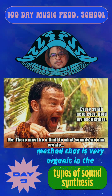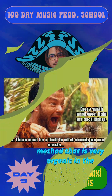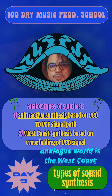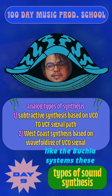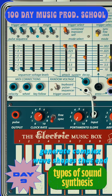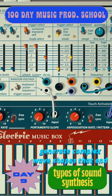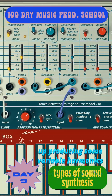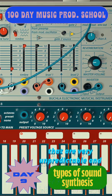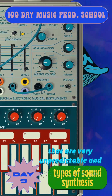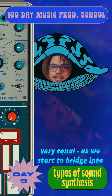Another method that is very organic in the analog world is west coast synthesis, also known as the wave folding method, like the Buchla systems. These generate complex wave shapes that end up producing some variable harmonics that is very unpredictable and very tonal.